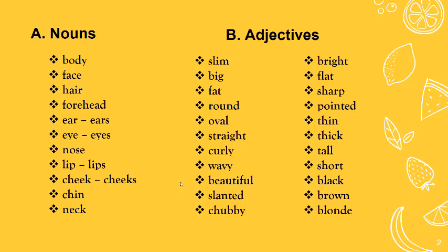Now the adjectives. Kata sifatnya nanti ada: slim, big, fat, round, awful, straight, curly, wavy, beautiful, slanted, chubby, bright, flat, sharp, pointed, thin, thick, tall, short, black, brown, and long.